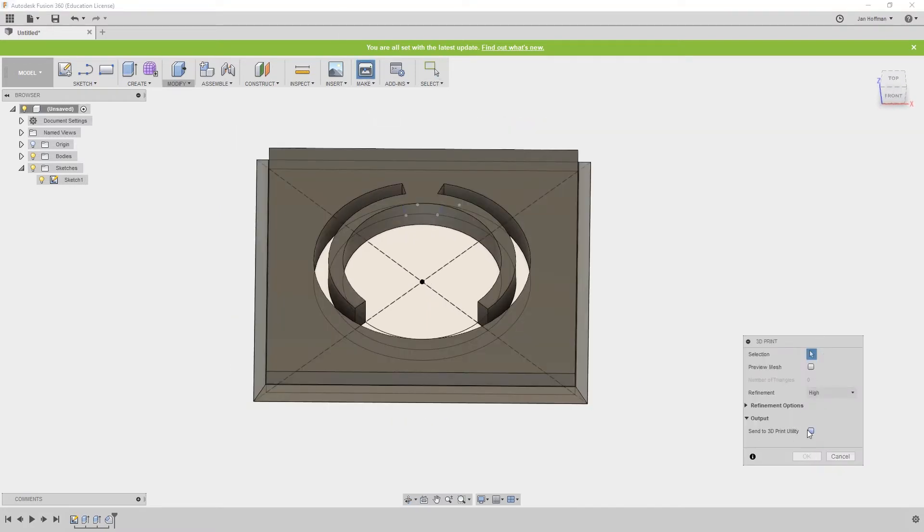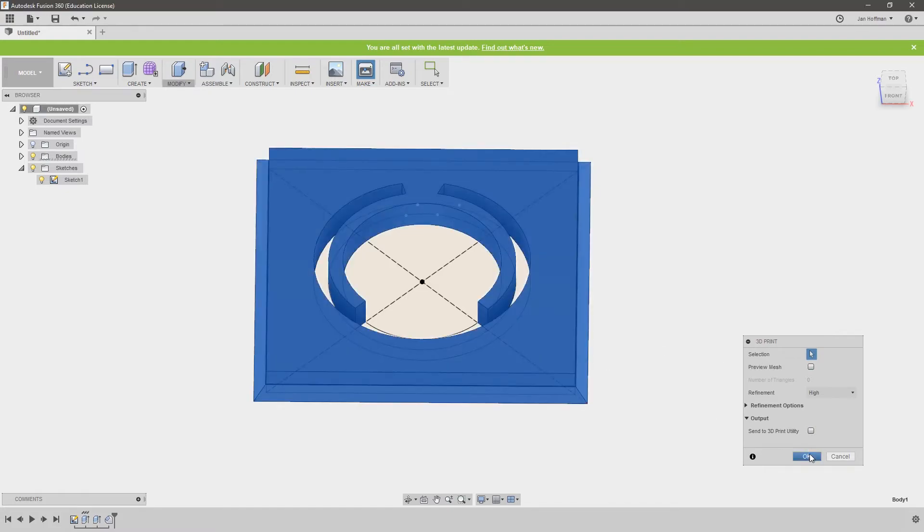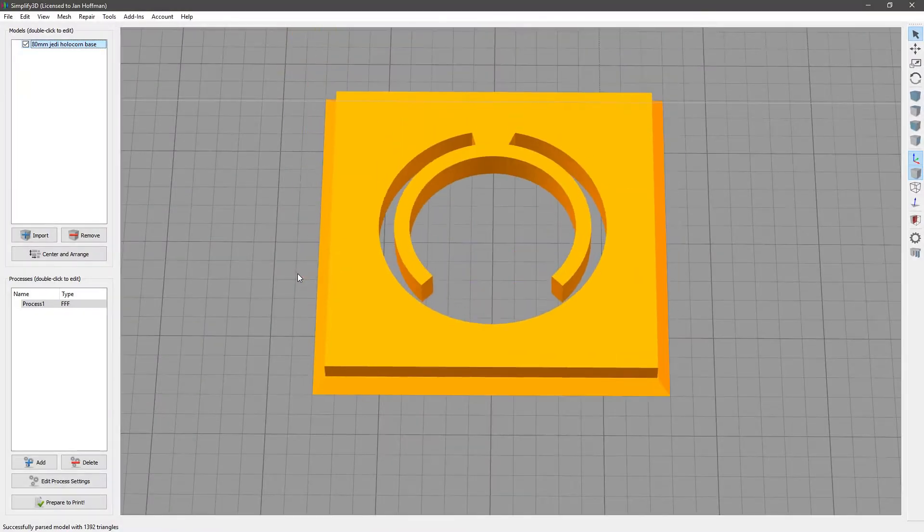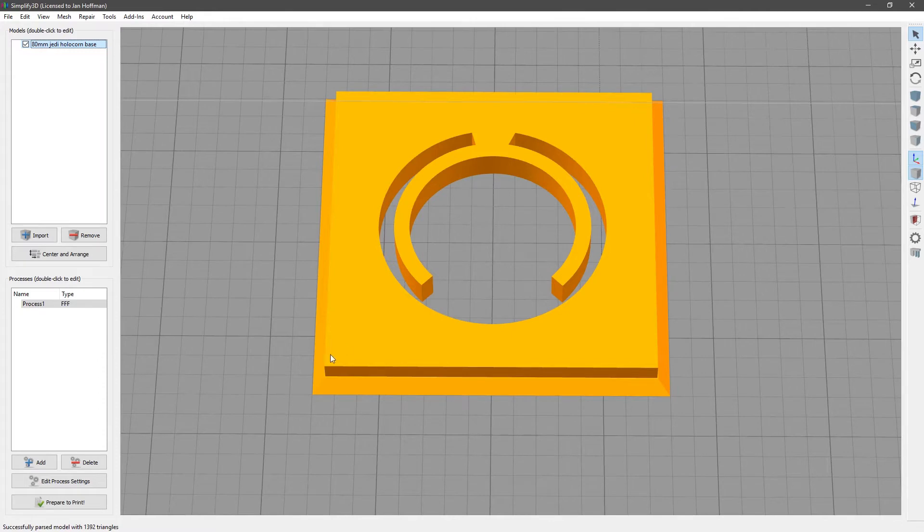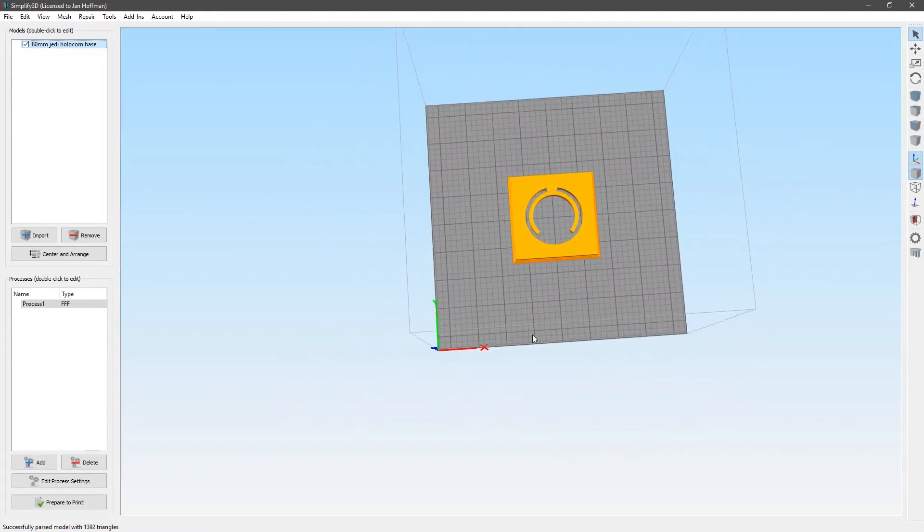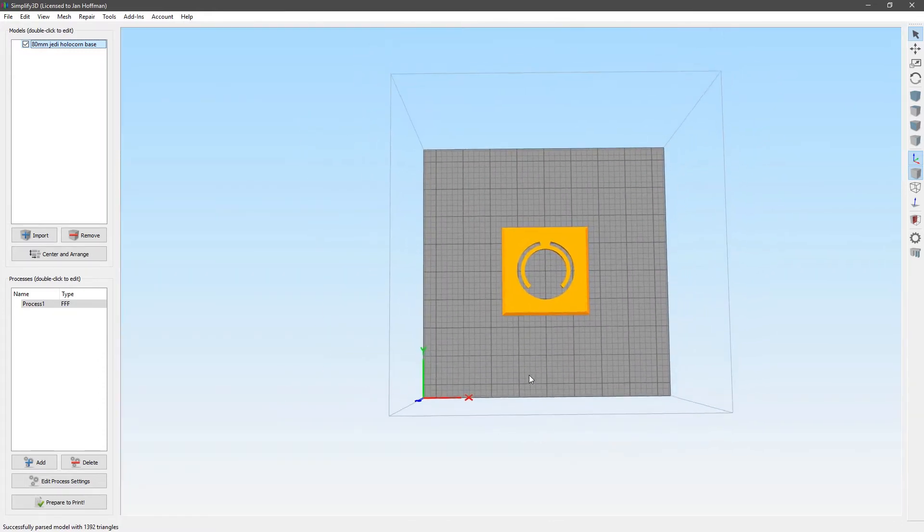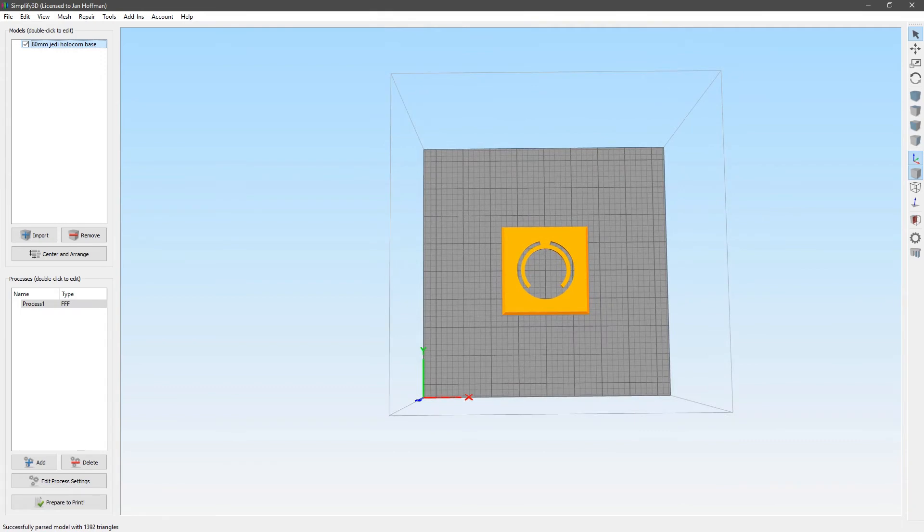And then all we do is export, select the model, hit OK, and here we are in Simplify 3D. The model looks fine, it's a bit lonely on the print bed, so let's print another part with it, and let's print the top, so that then we can print the four wall pieces together as a separate print.